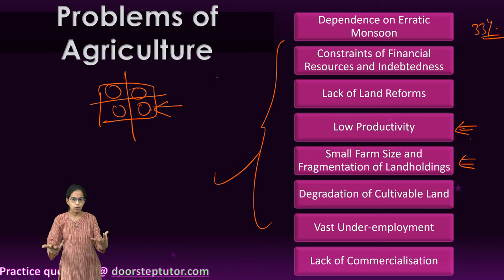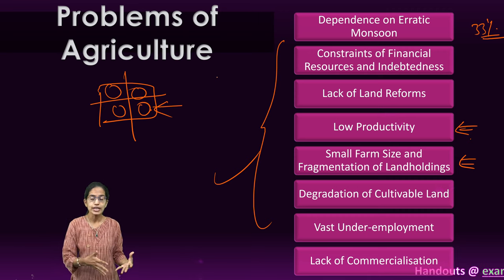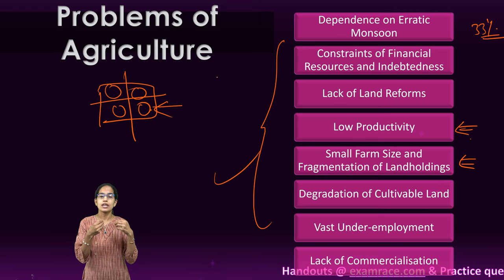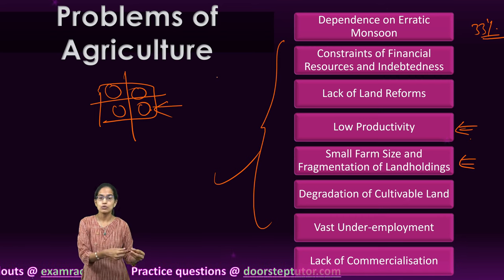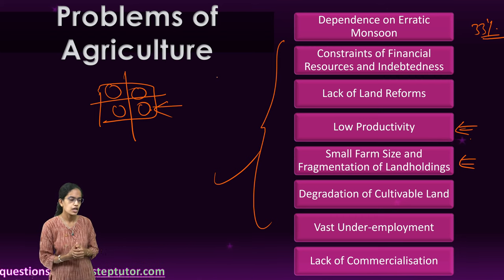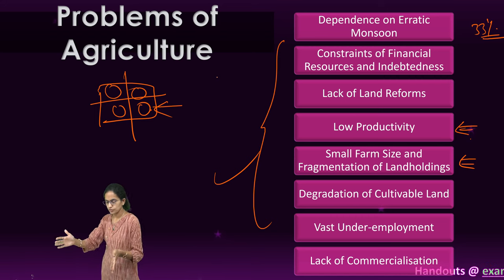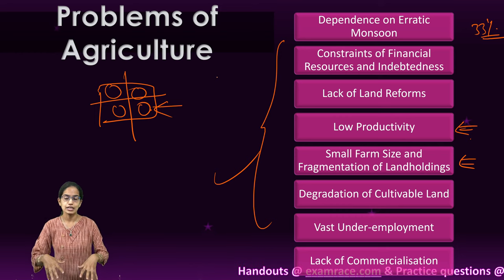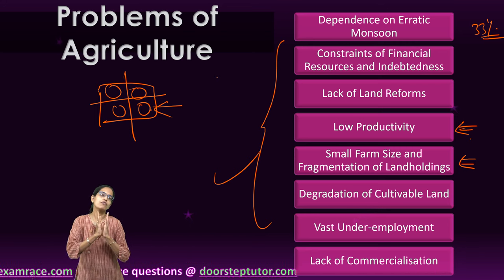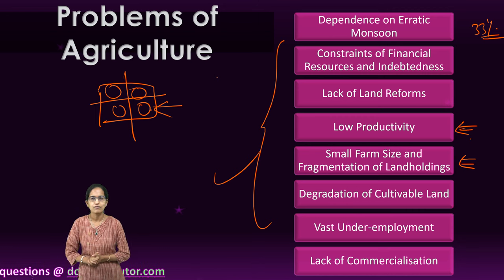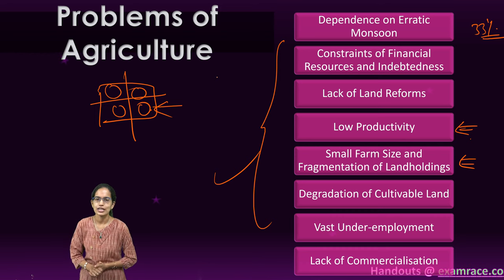Leguminous crops have been displaced, removing the natural mechanism for restoring soil nitrogen fertility, forcing reliance on artificial fertilizers which further deteriorates soil quality. To address these problems, schemes like the Soil Health Card, JAM Trinity for financial inclusiveness, Pradhan Mantri Krishi Sinchayee Yojana for irrigation, and Pradhan Mantri Fasal Bima Yojana for crop insurance have been introduced. These problems remain very deep, and addressing them promptly is the need of the hour.